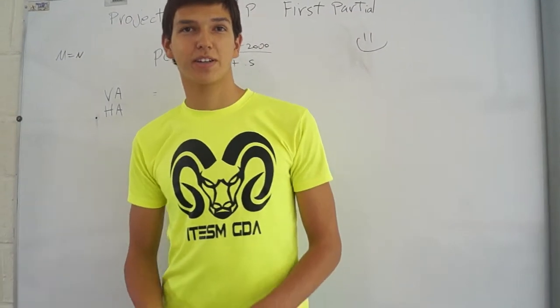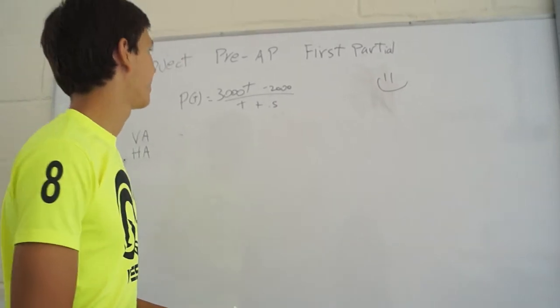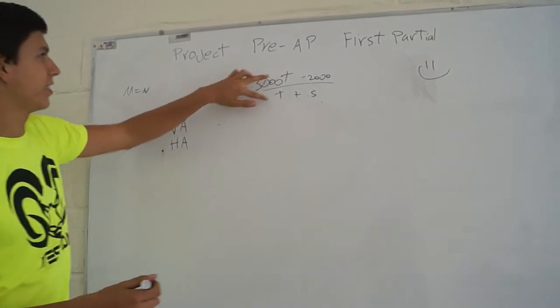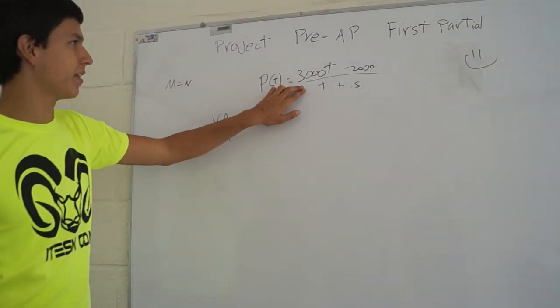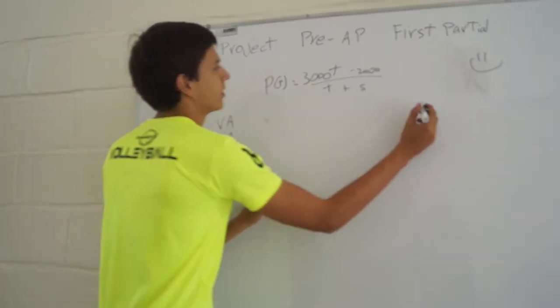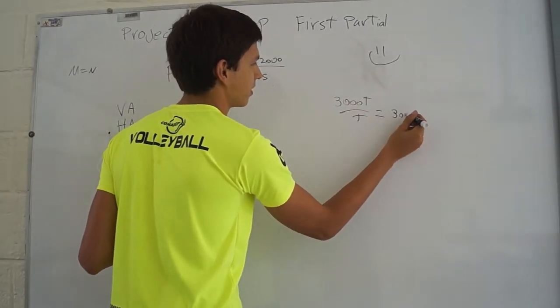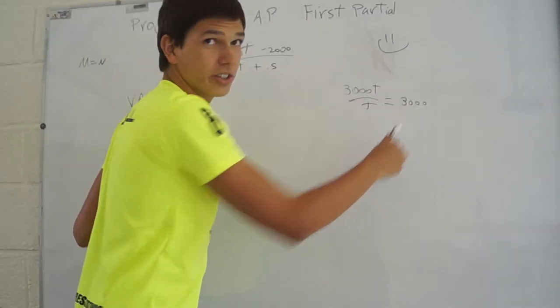Now for the next part we have to find the center. Here we have to find that M is equal to N. Here we have two tiers. We have to divide. So we have three asymptotes. 3000 divided by T. So this is our horizontal asymptote.